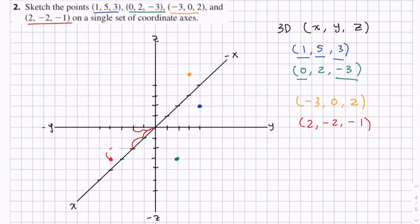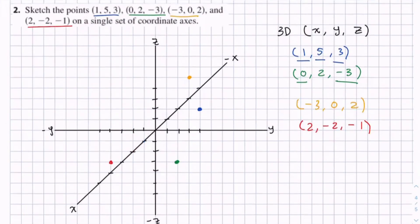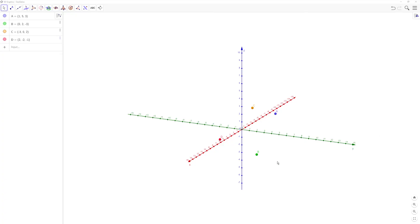So these are the four points in one single set of coordinate axes. Sometimes it's hard to visualize because I'm drawing on a 2D paper. So sometimes it's easier if we digitalize it. So let me show you what this looks like in a 3D application called GeoGebra. As you can see, we have our points. They're color coded. And we have our three coordinate axes. And we have something very similar to what we drew. But now if we rotate it, you can see a better view of each of the points.